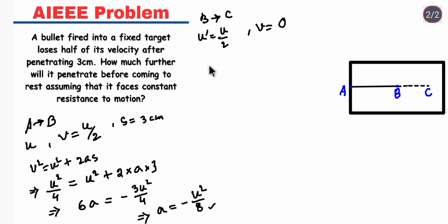If we again use the relation V squared equals U squared plus 2AS and put the values, our final velocity is 0 and U prime is U squared by 4 plus 2 into acceleration minus U squared by 8 into S.